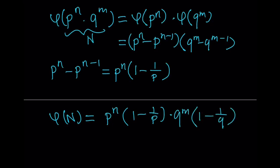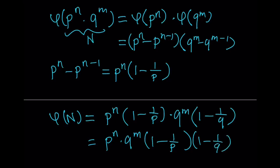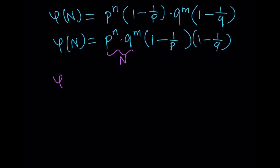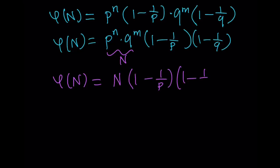Notice that p and q are distinct primes. When you multiply everything together, you get p^n times q^m — which is just the number N itself — multiplied by (1 − 1/p) times (1 − 1/q). So phi of N equals N times (1 − 1/p) times (1 − 1/q). This generalizes to more primes.